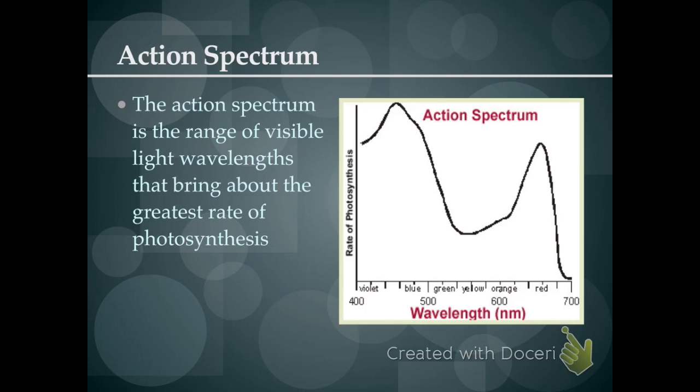So the absorption spectrum are the colors of light that chlorophyll actually absorbs. This absorption leads to the action spectrum, and the action spectrum are the wavelengths of light that actually cause photosynthesis to occur. So as you can see, this curve is very similar to the absorption spectrum, with the most photosynthesis happening with the blues and purples, a lot happening with reds and oranges as well, with a dip in that green and yellow region, because chlorophyll is not effectively absorbing that light, therefore it's not causing an action.